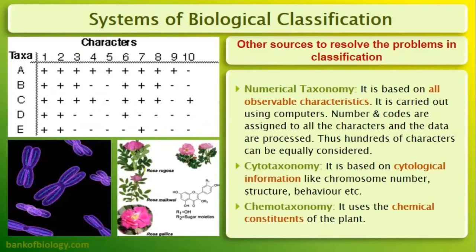There are other sources used to resolve problems in classification: numerical taxonomy, cytotaxonomy, and chemotaxonomy. Scientists have faced problems in biological classification and have given various methods to properly classify organisms and build accurate taxonomy.